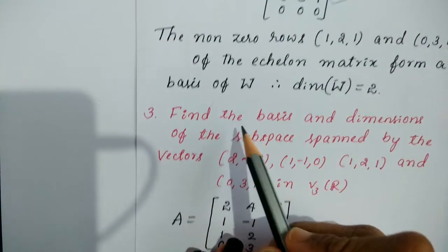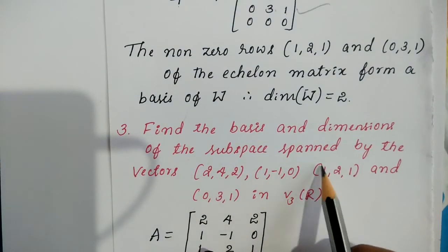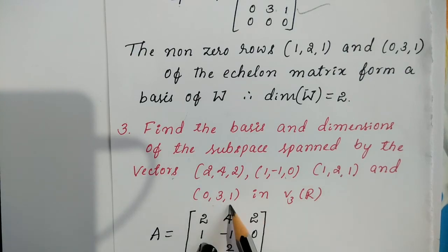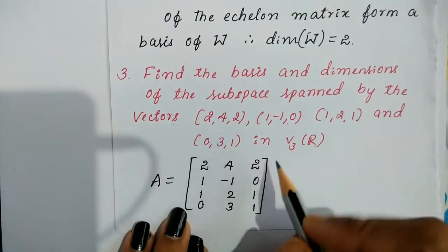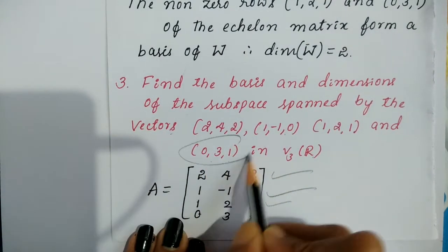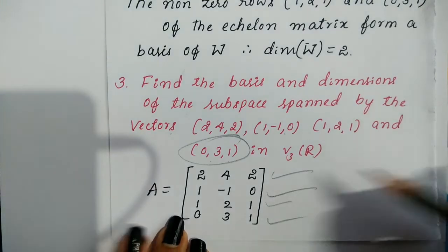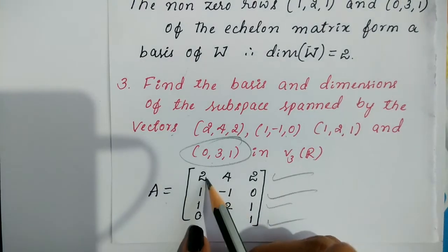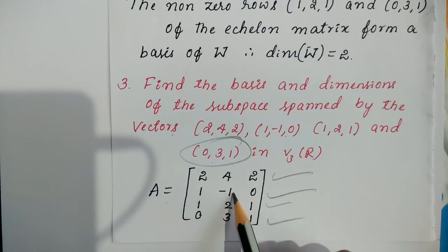Third and last problem of this type: find the basis and dimension of the subspace spanned by the vectors (2,4,2), (1,−1,0), (1,2,1), and (0,3,1) in V3 of R. Take these four vectors as rows 1, 2, 3, and 4 of matrix A, then convert to row reduced echelon form.